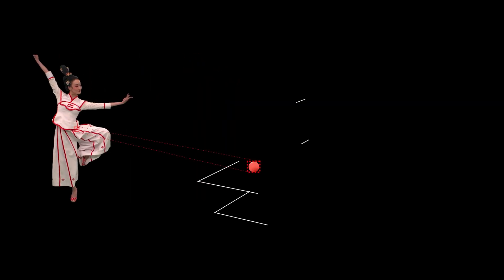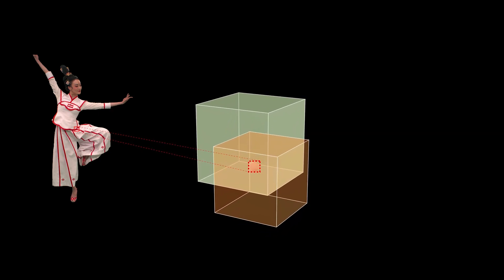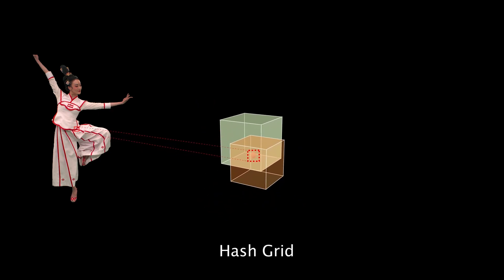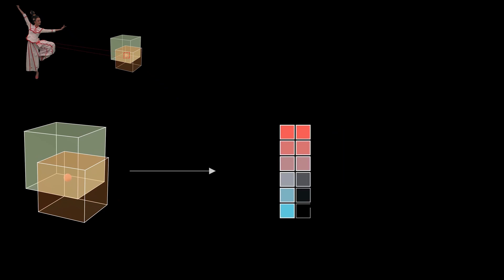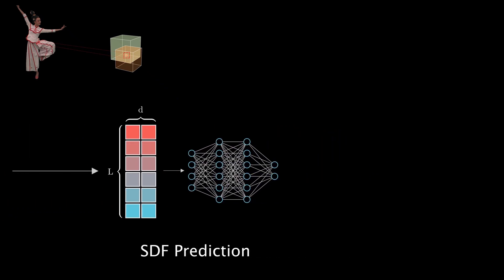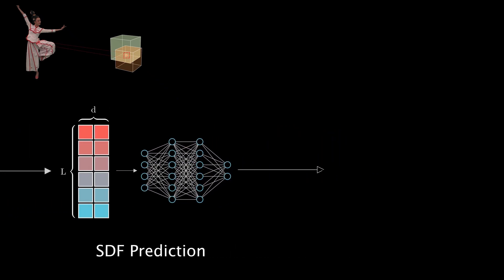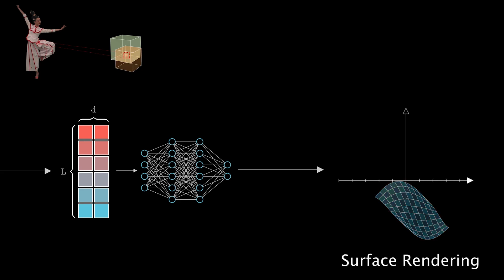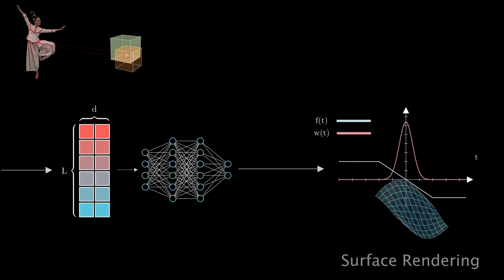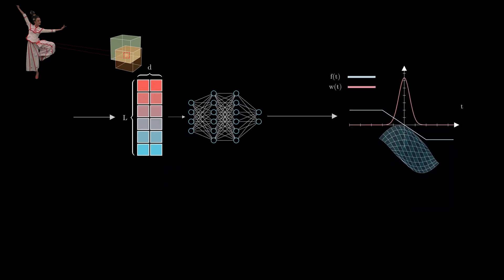For each 3D position of the scene, we generate a feature vector using a 3D multi-resolution hashgrid. Taking it and viewing direction as inputs, a shallow network outputs SDF value and color. We adopt a surface rendering technique based on truncated SDF function to reconstruct the 3D surface with accurate normal estimation.